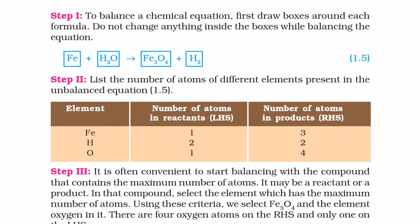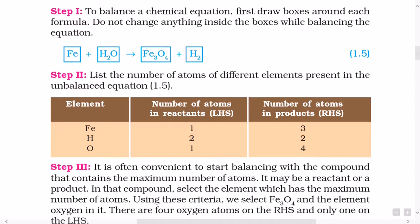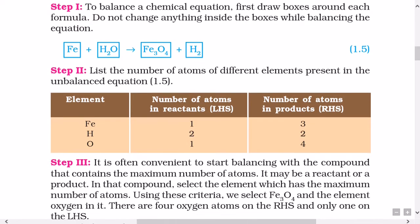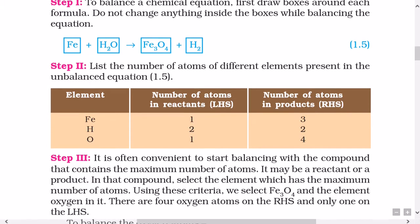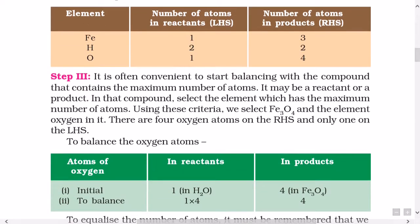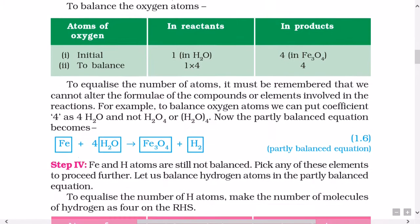Let us try to balance the following chemical equation: Fe plus H2O gives Fe3O4 plus H2. Step 1: To balance a chemical equation, first draw boxes around each formula. Do not change anything inside the boxes while balancing the equation. Step 2: List the number of atoms of different elements present in the unbalanced equation. Step 3: It is often convenient to start balancing with a compound that contains the maximum number of atoms. It may be a reactant or a product. In that compound select the element which has the maximum number of atoms. Using these criteria we select Fe3O4 and the element oxygen in it. There are four oxygen atoms on the RHS and only one on the LHS. To balance the oxygen atoms,